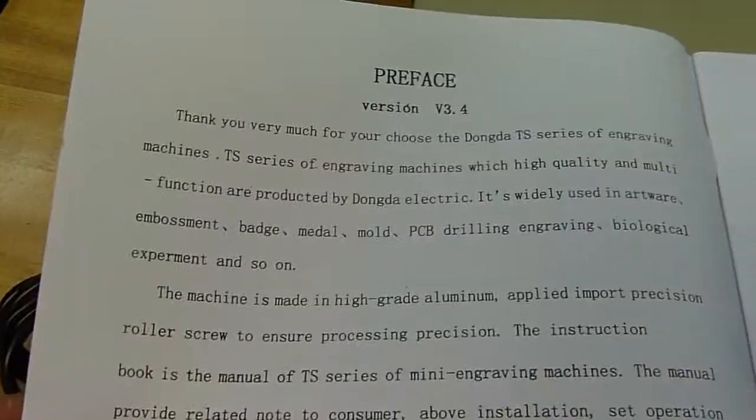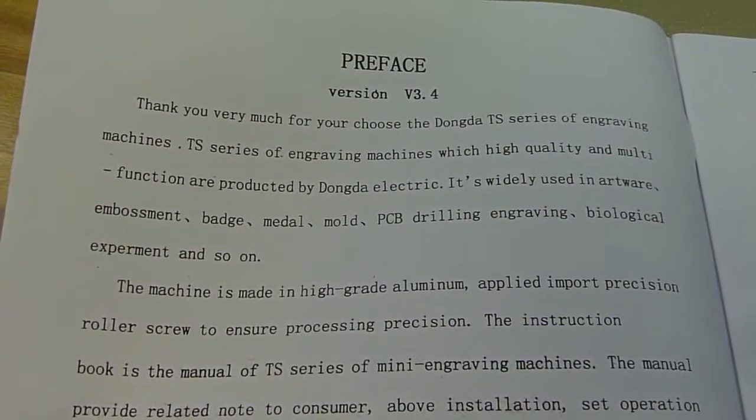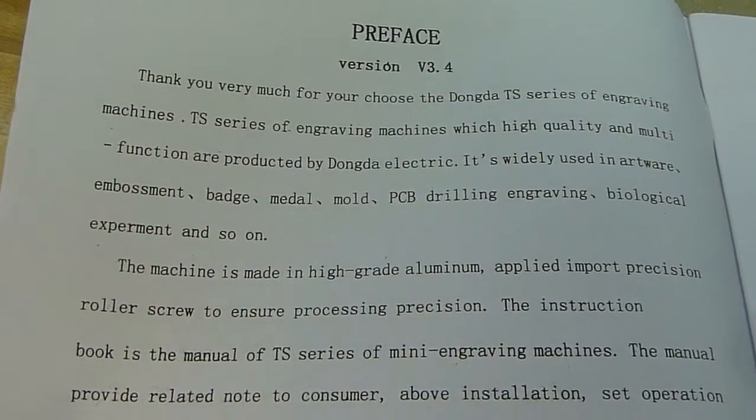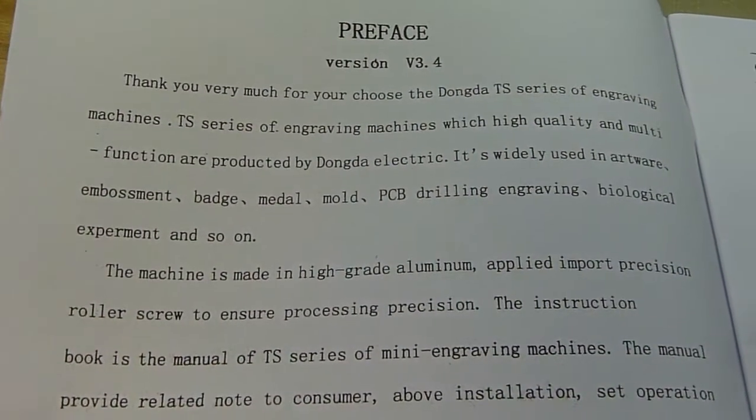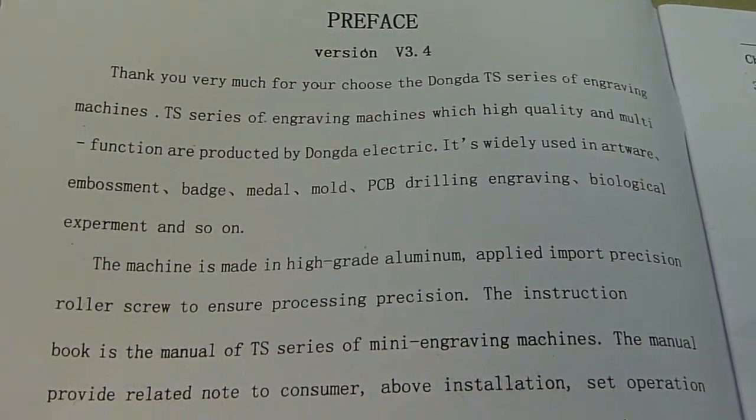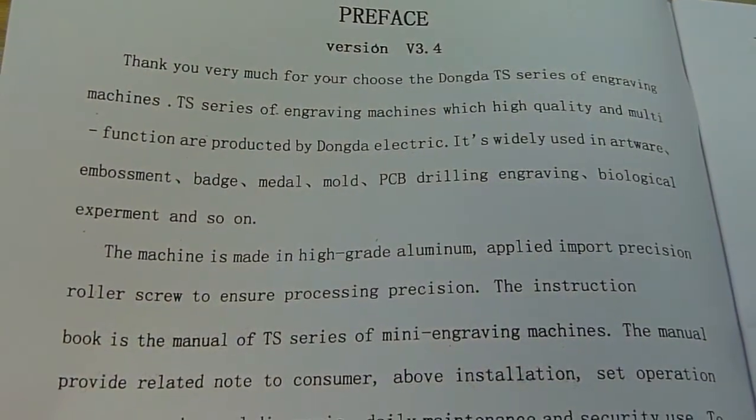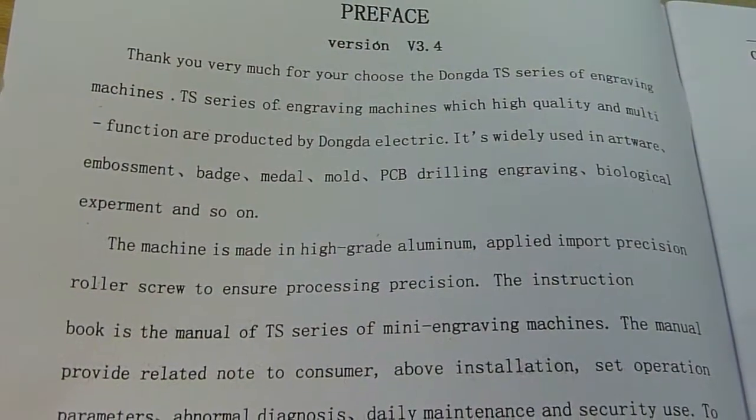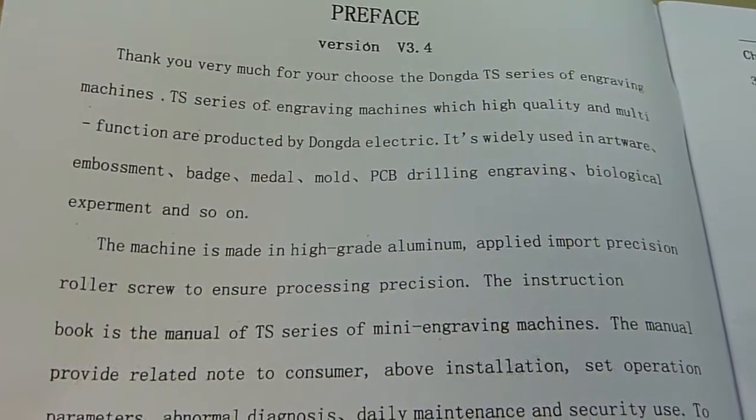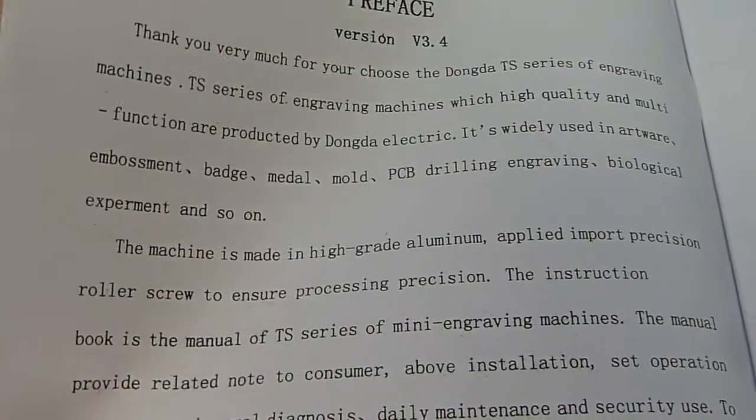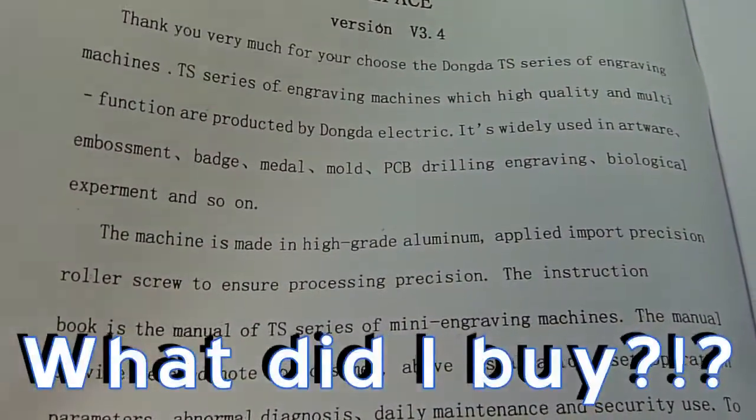This is the manual here. Thank you very much for your choose the Donda DS series of engraving machines. It's widely used in hardware embossment, badge, metal, mold, PCB drilling, engraving, biological experiment, and so on. The machine is made in high-grade aluminum... Biological experiments?